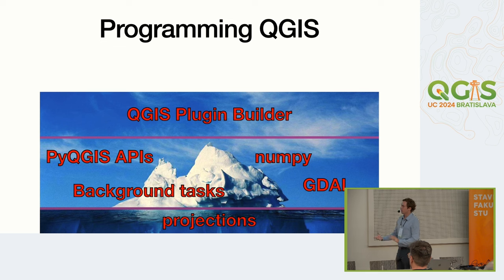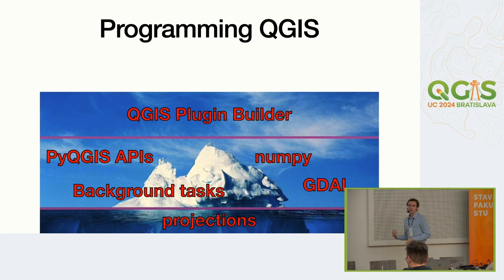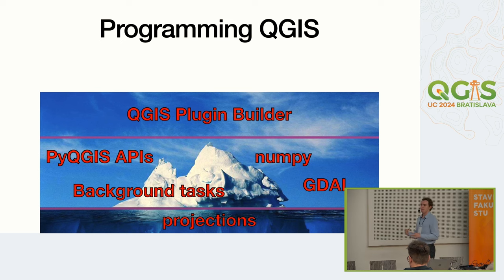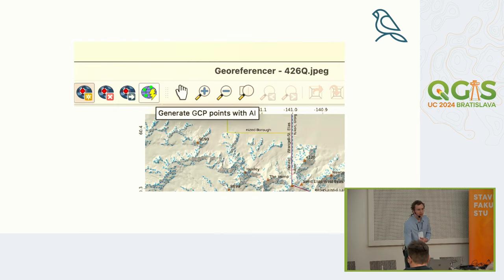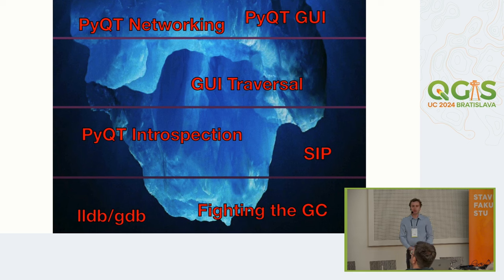Maybe you go into the QGIS plugin builder and it generates scaffolding for your plugin — that's awesome, you can get right started, hit the plugin reloader and go. Then you get a little more complex: you might start using PyQGIS APIs, calling into numpy and GDAL, starting background tasks for larger processing, and maybe working with projections. But that's where I want to introduce the mental model of the iceberg of QGIS programming, because these starter approaches don't quite get you to the more complex functionality that exists within QGIS.